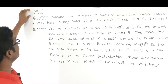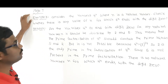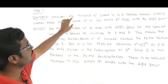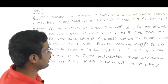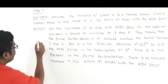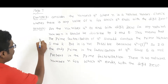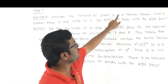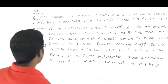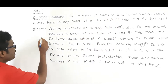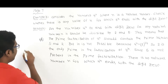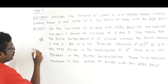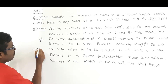Now we have Example 3 on page number 7. Consider the numbers 4 to the power of n, where n is a natural number. Natural numbers start from 1, 2, 3.